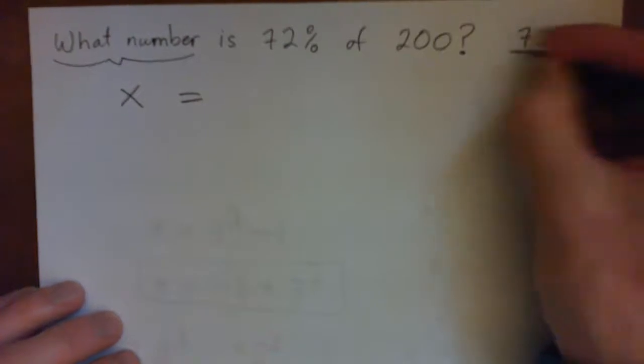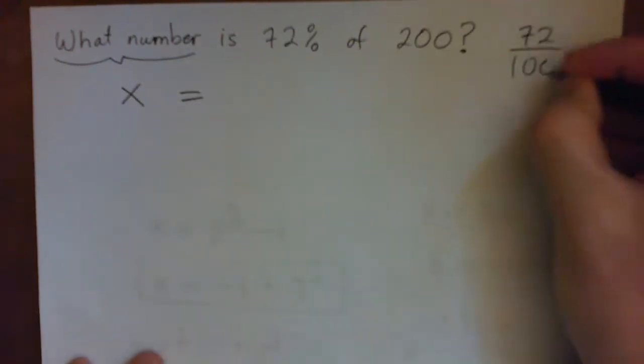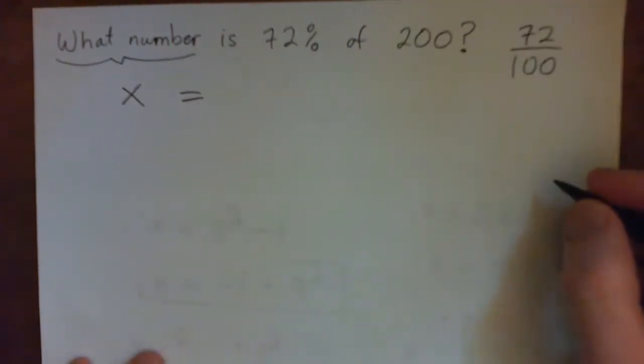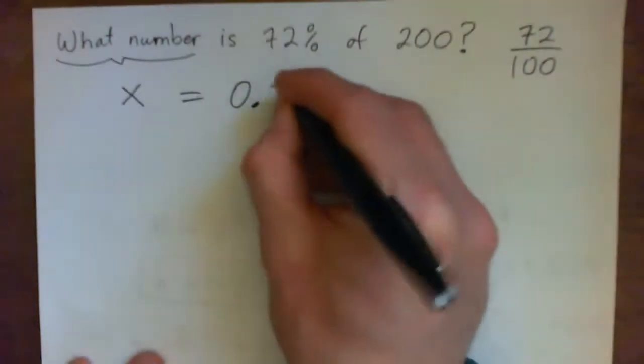72% is 72 over what? 72% as a fraction is 72 over 100, right? And 72 hundredths is 0.72.